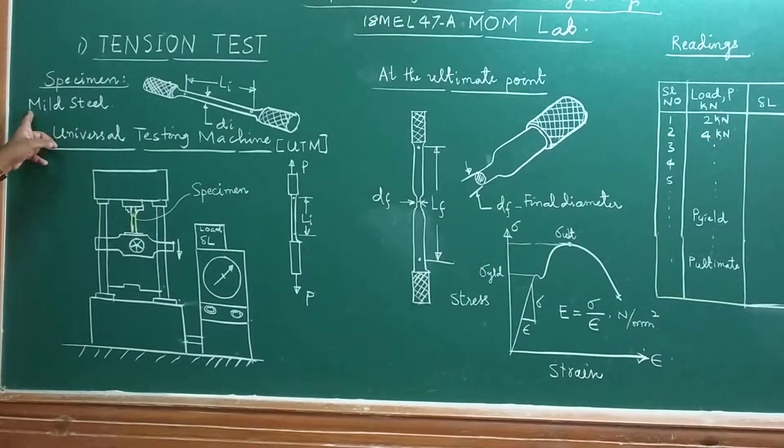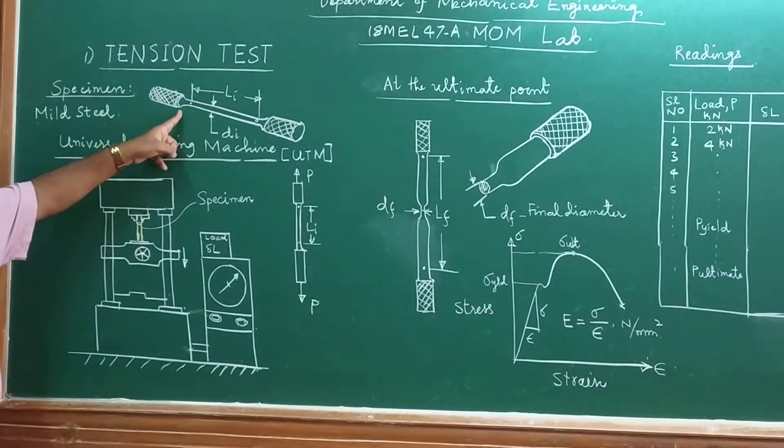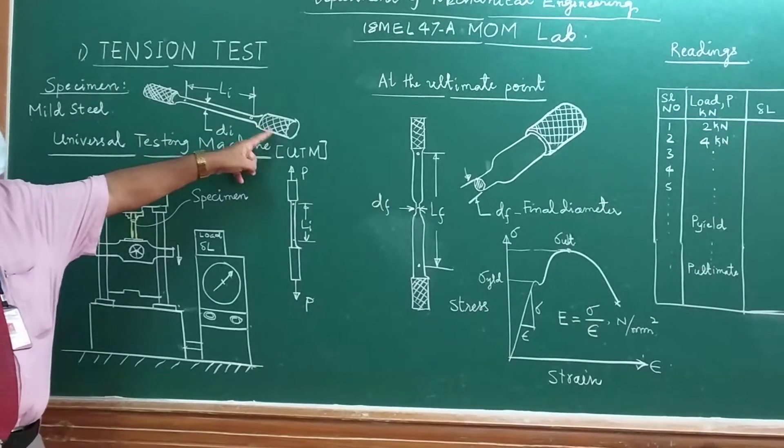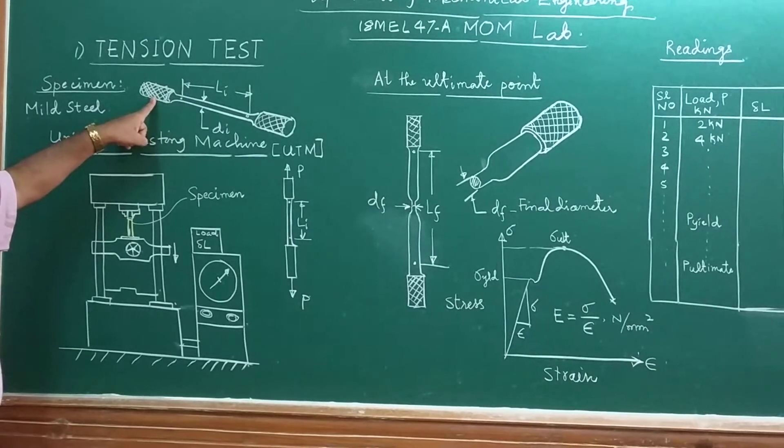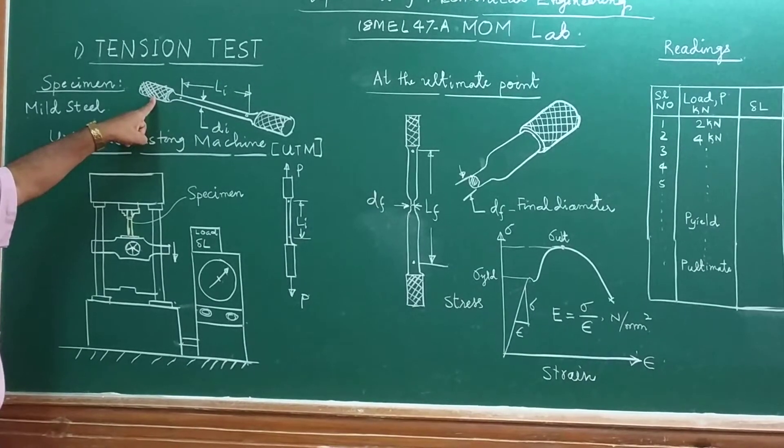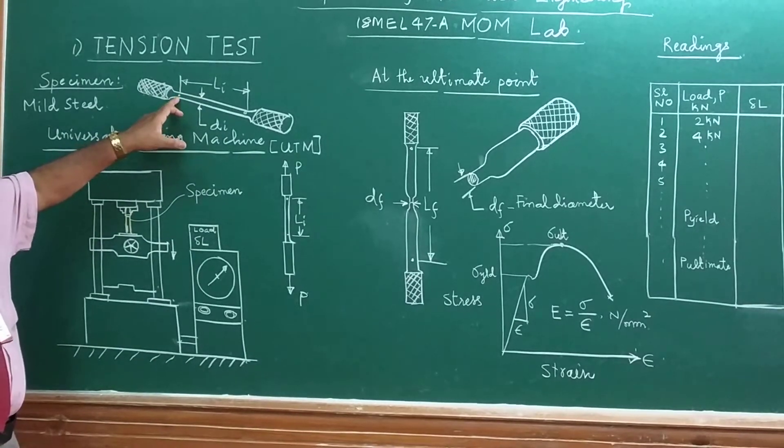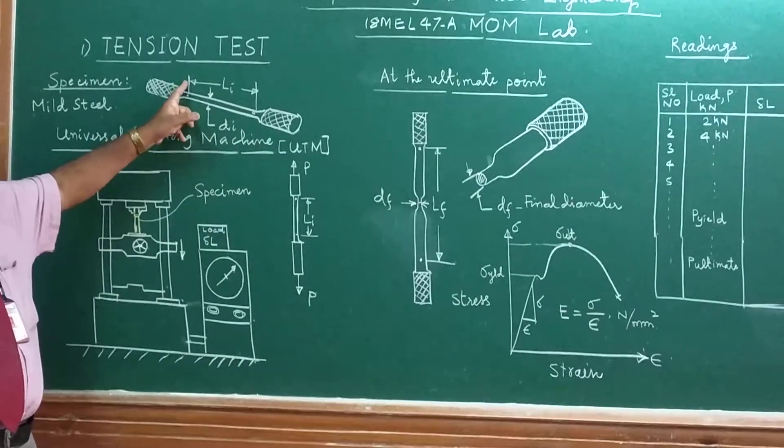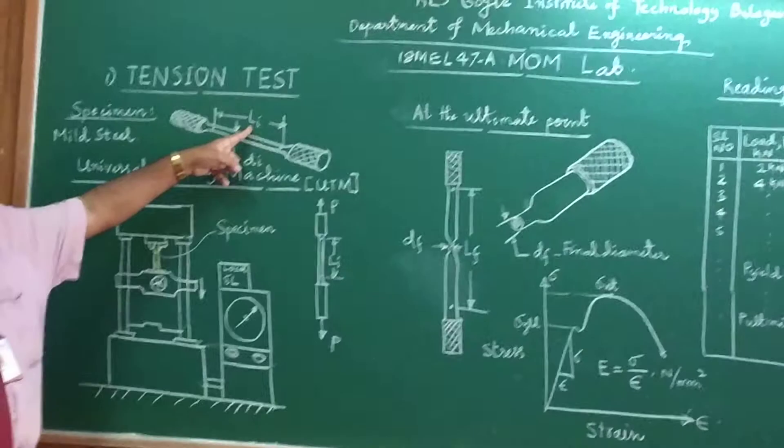This test is conducted on mild steel specimen, which is a ductile material. This is the shape of the specimen with two ends and two grippers. Knurling has been done to increase the grip of the two ends in the jaws. Here we have to punch two marks, which is called the gauge length, and measure the length between these two points, called the initial length Li.